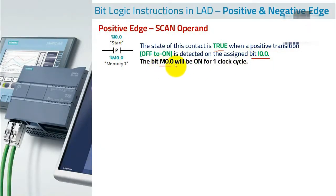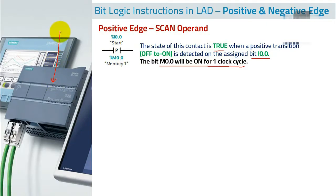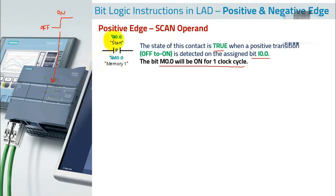The bit M0.0 will be on for one clock cycle. This bit will be true if you have a positive transition on I0.0 — meaning if an input connected to the PLC, like a switch, goes from off to on. This could be pressing a switch, getting a signal on a sensor, or pressing a limit switch.